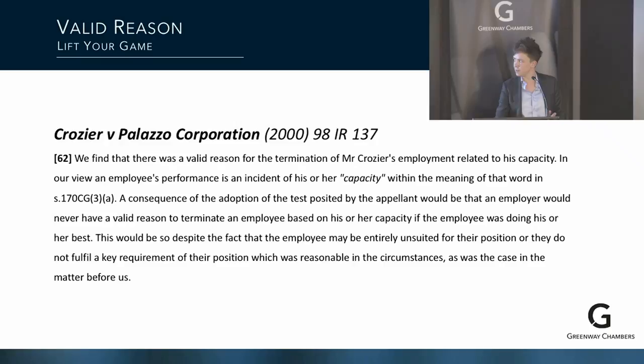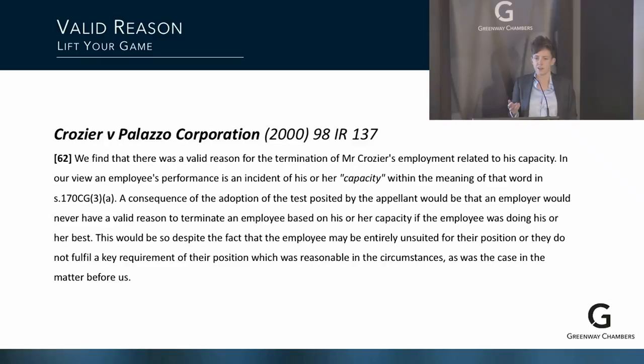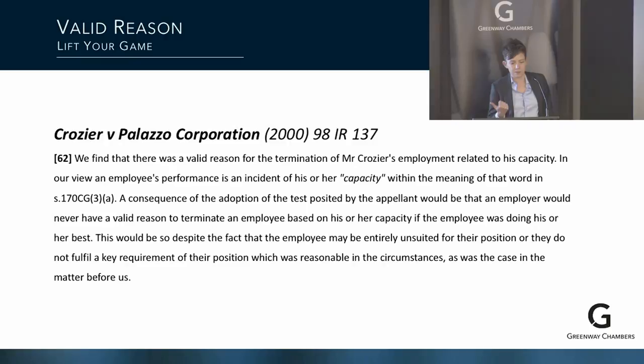Starting with valid reason: the statement of principle still used comes from Crozier v Palazzo Corporation, decided in 2000 by the old Australian Industrial Relations Commission. That's the paragraph quoted in every decision. What Crozier stands for is the idea that dismissal based on performance goes to the employee's capacity — their ability or inability to do the job. It's a more interesting case than that extract reveals because it explores every aspect of a performance-based dismissal.